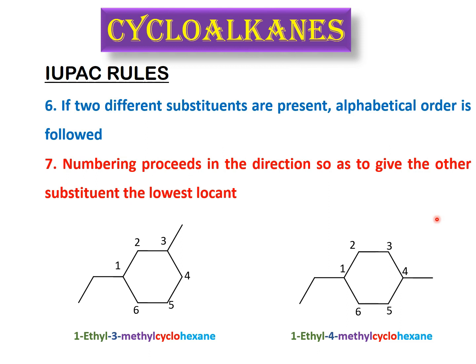You can also have more than two substituents on the ring. In that case, first find the numbering that gives the lowest locants to all substituents. If positions are equal from multiple starting points, then apply alphabetical order to decide. Proceed in the direction that gives the lowest locant to the remaining substituents. I hope this helped — if you have any questions, feel free to ask. Thank you!